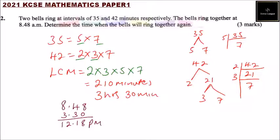So the bells will ring again at 12:18 PM, and that is how you answer that question. You'll be able to get three marks. You don't need to write all this explanation. You just need to get the factors, get the LCM, convert to hours, and add to the time when the bells had rung together.